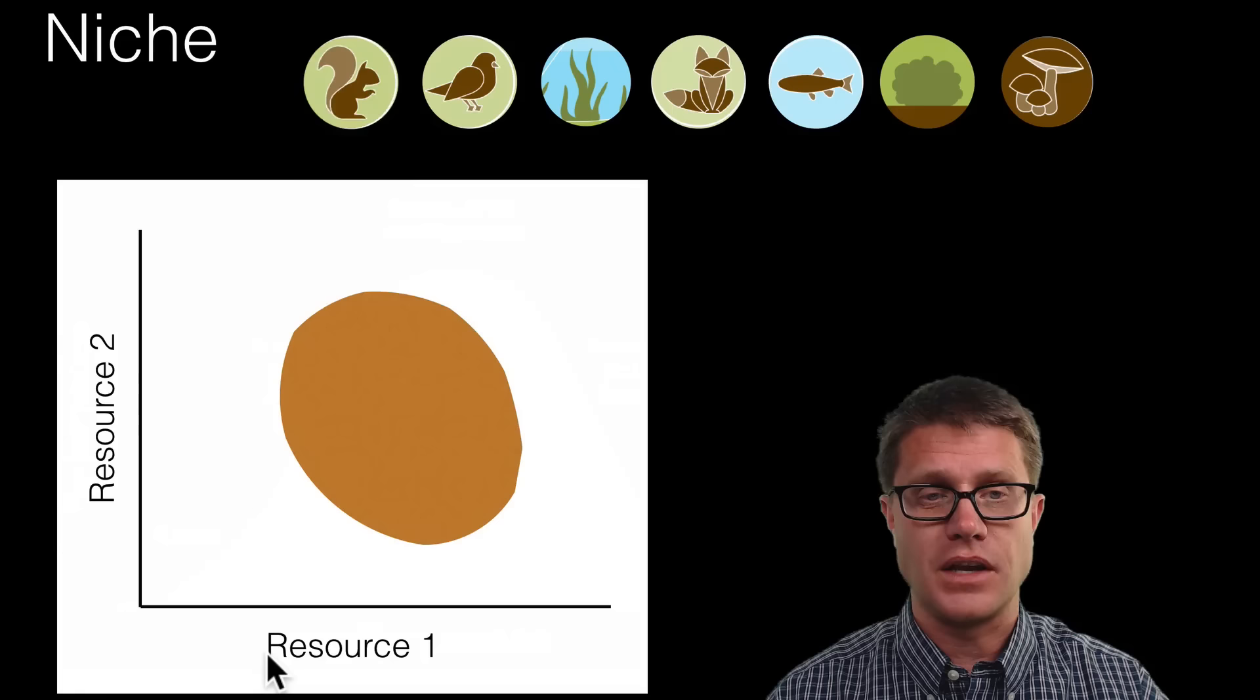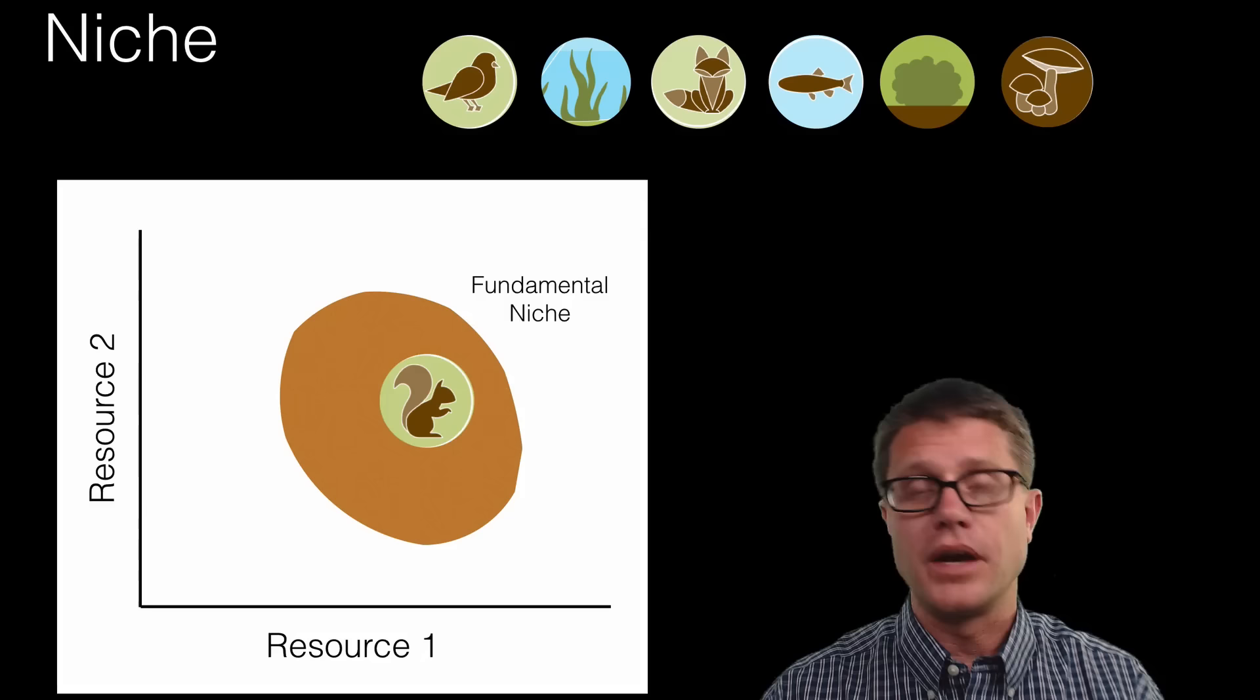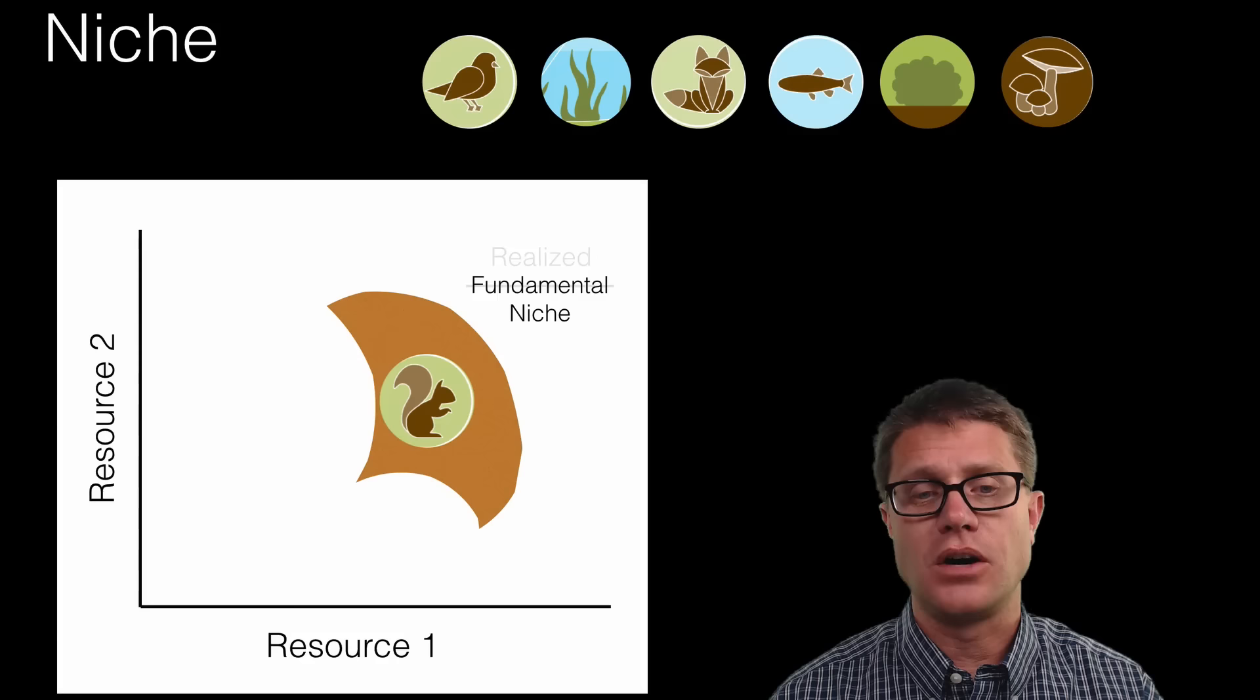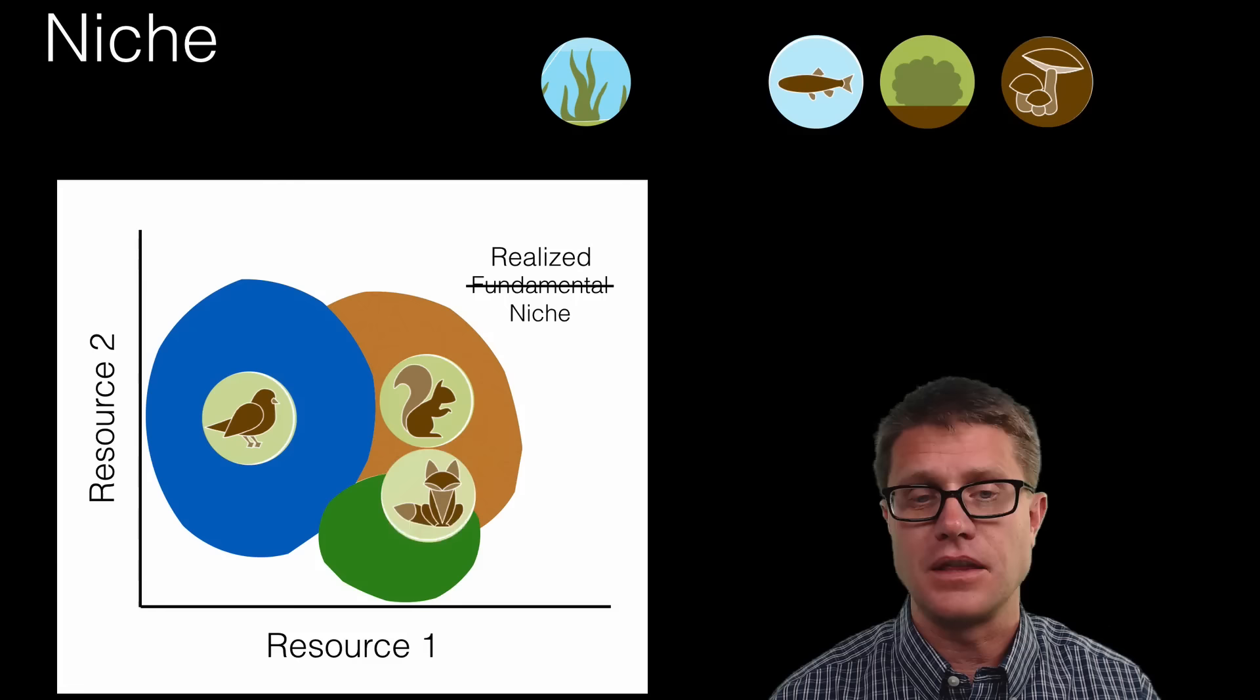We can represent that on this graph as here is the two resources I need and that is going to be my fundamental niche. That is where this squirrel could live. Now what you'll find is that it actually does not fit that way. You have what is called a realized niche where it could live in all that areas but it only lives in this small area. The reason why is that there are other niches outside that. There is competition going on.